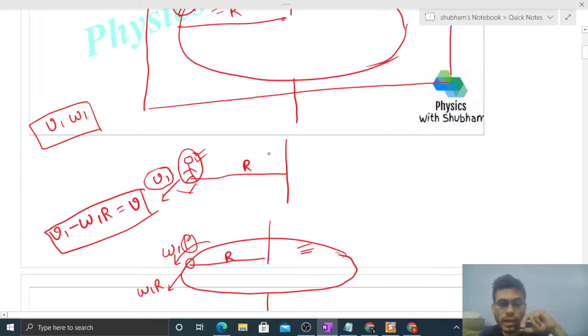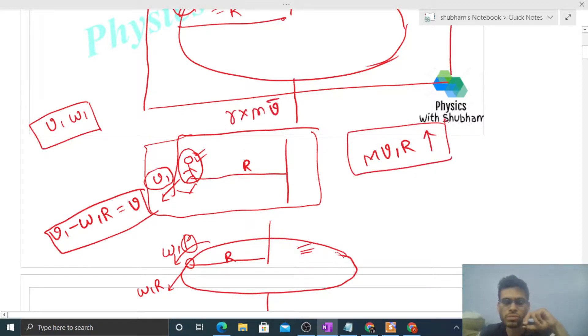Second equation: final angular momentum. The kid's angular momentum will be its mass times its velocity times R. The direction is R cross v, which is in the upward direction. Angular momentum is R cross linear momentum, M into v.